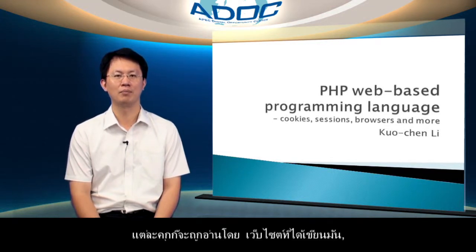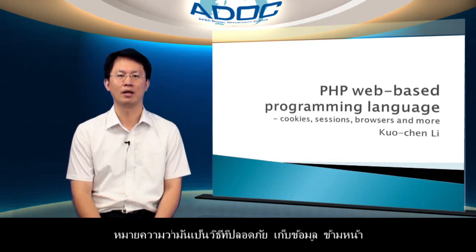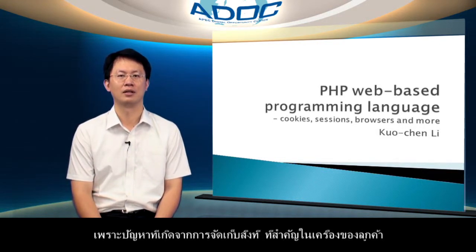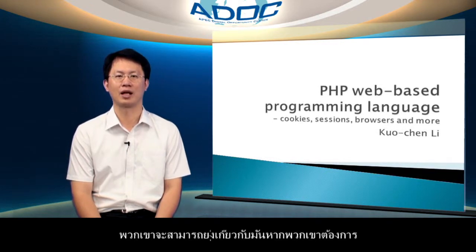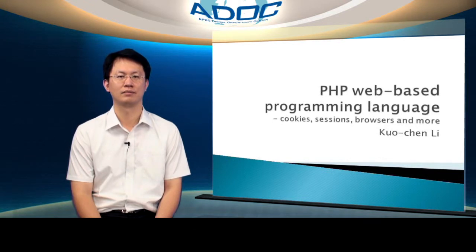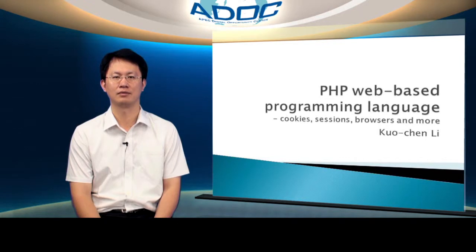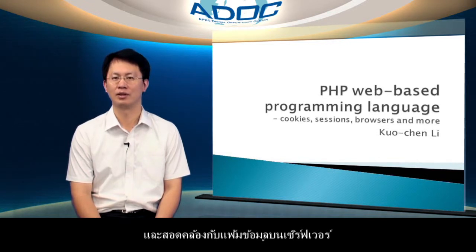Each cookie could only be read by the website that had written it, meaning that it was a secure way to store information across pages. And sessions grew up from cookies as a way of storing data on the server side, because the inherent problem of storing anything sensitive on client's machines is that they are able to tamper with it if they wished. In order to set up a unique identifier on the client, sessions still use a small cookie, and this cookie simply holds a value that uniquely identifies the client to the server and corresponds to a data file on the server.